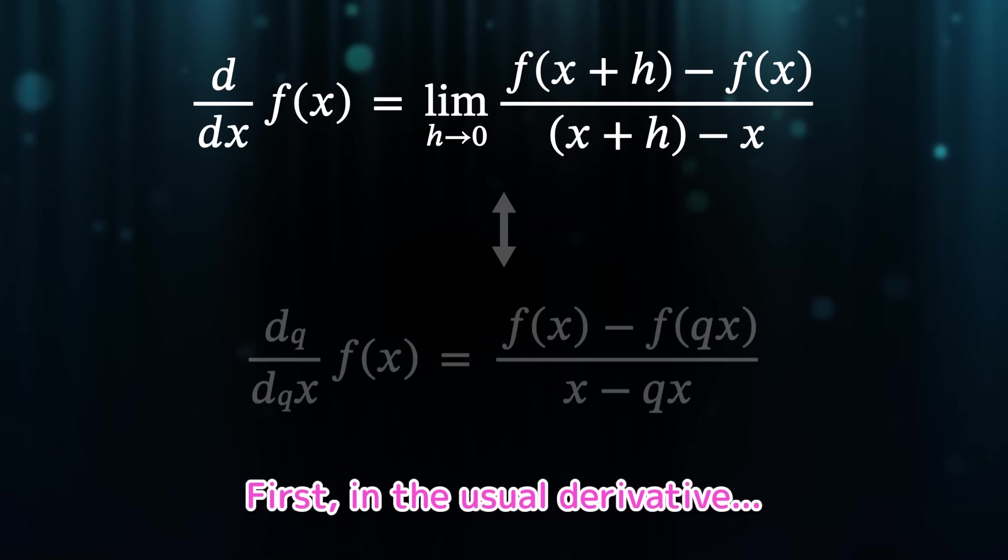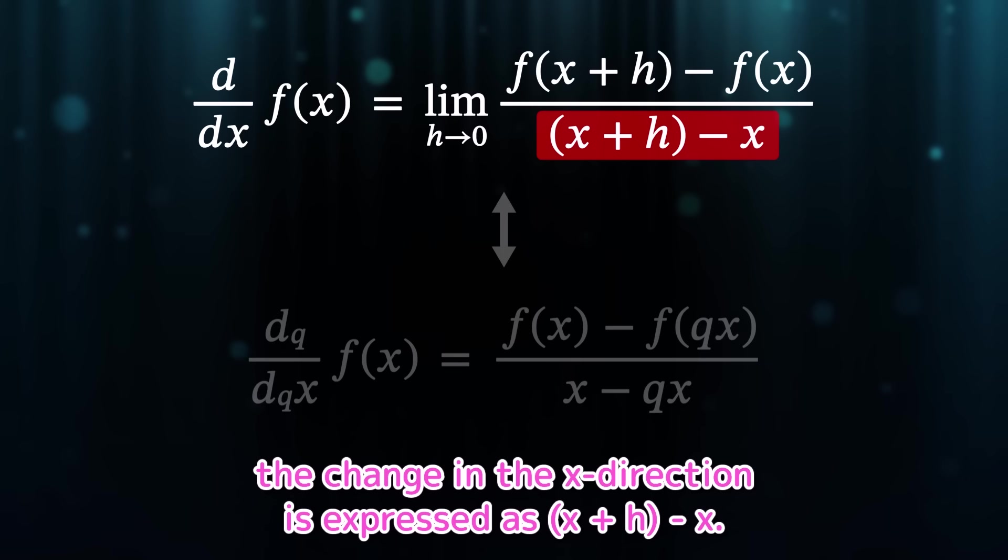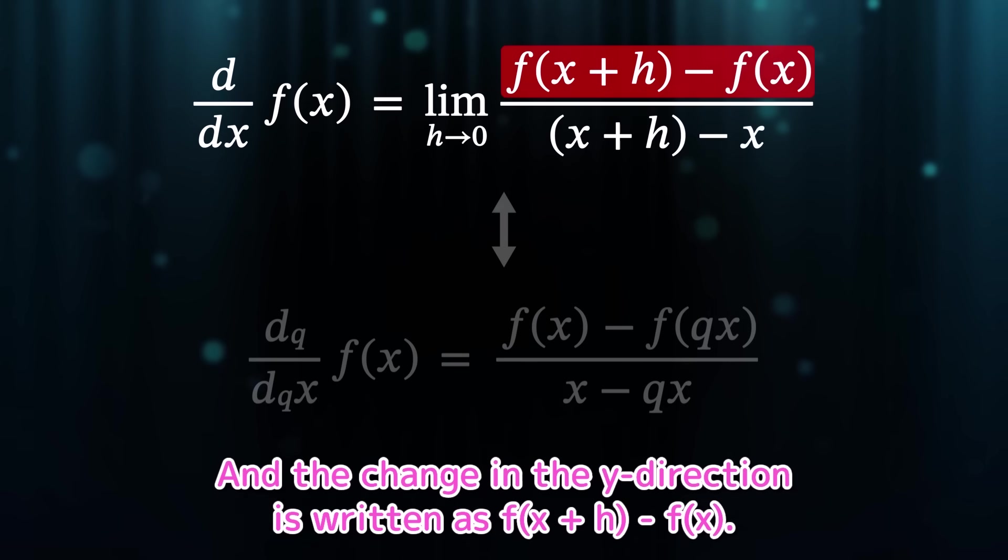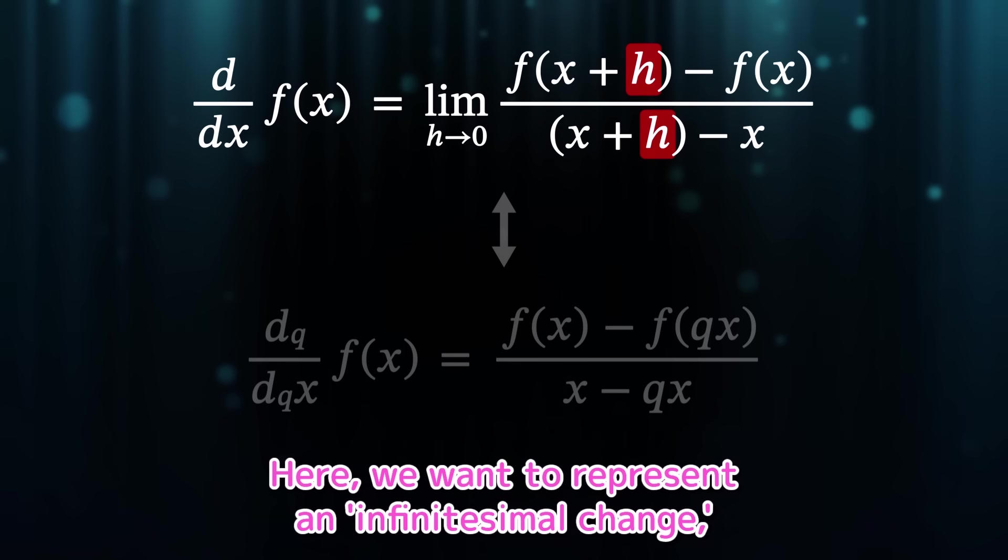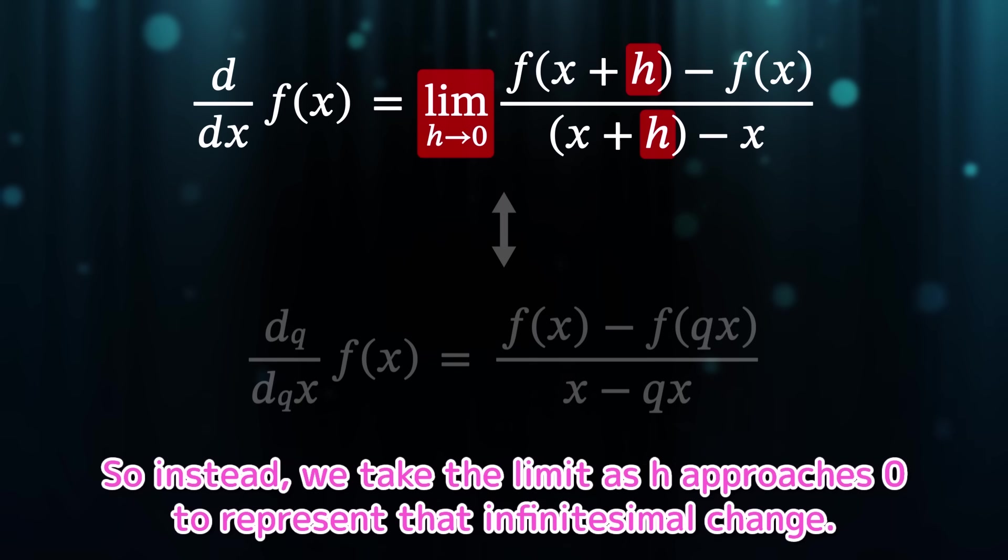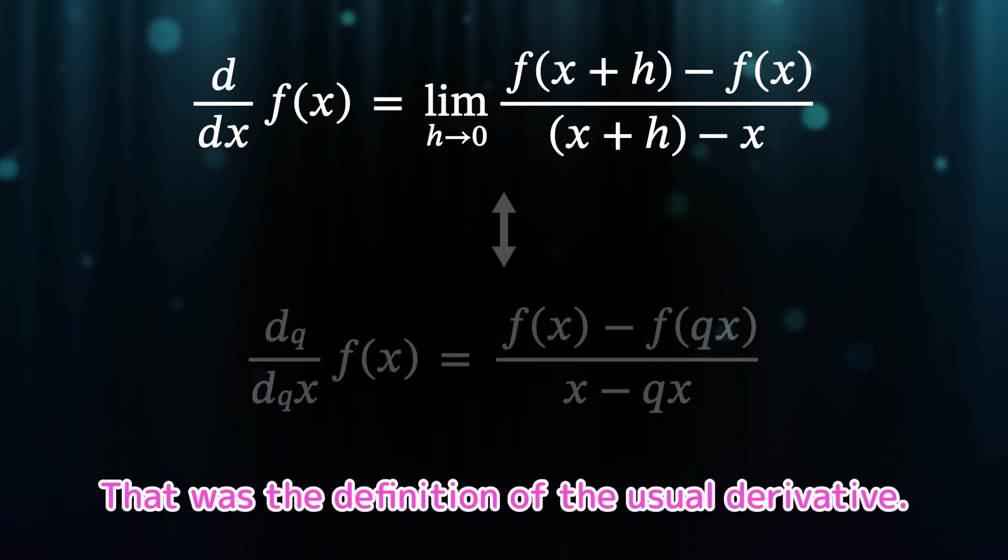Now, let's compare the usual derivative and the q-derivative. First, in the usual derivative, the change in the x-direction is expressed as x plus h minus x. Usually, we just write it as h. And the change in the y-direction is written as f of x plus h minus f of x.